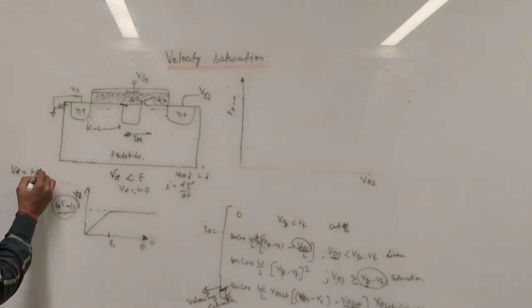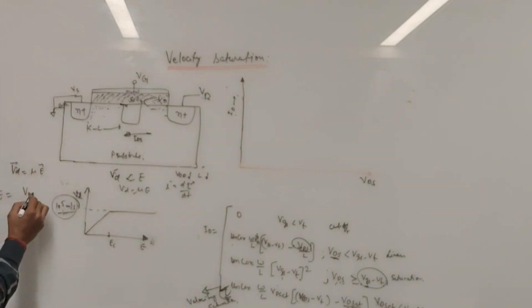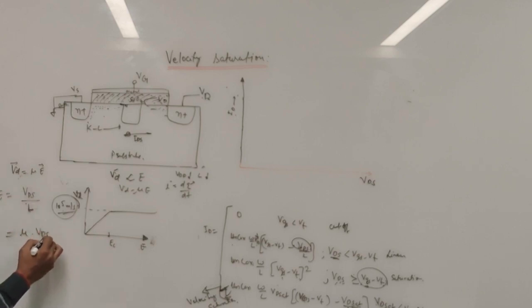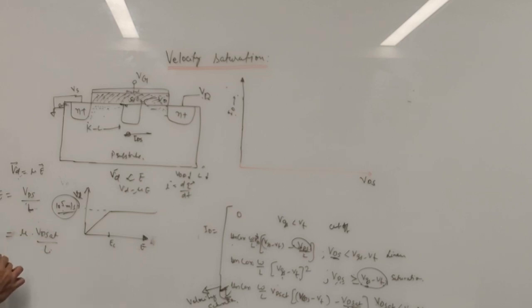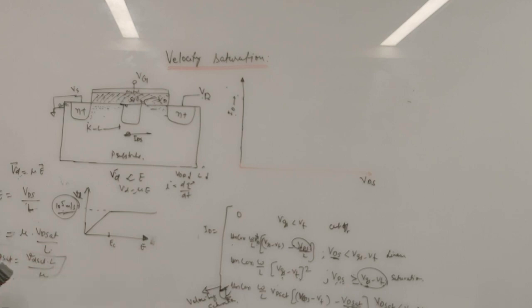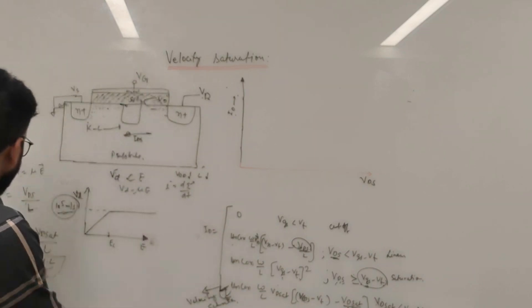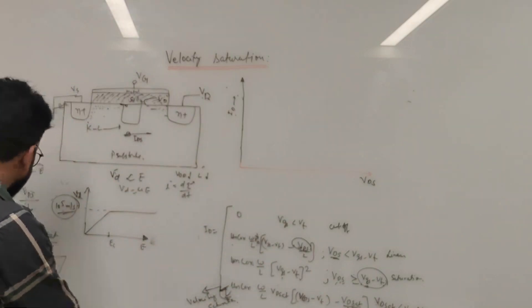We know V_D equals mu times E, and electric field is VDS divided by L. From this, the saturation drift velocity can be written as mu times VDSat divided by L. Rearranging, VDSat equals V_sat times L divided by mu. So VDSat is the drain-to-source voltage at which we see the effect of velocity saturation in the drain current equation. We can combine these equations to develop an expression that includes velocity saturation.